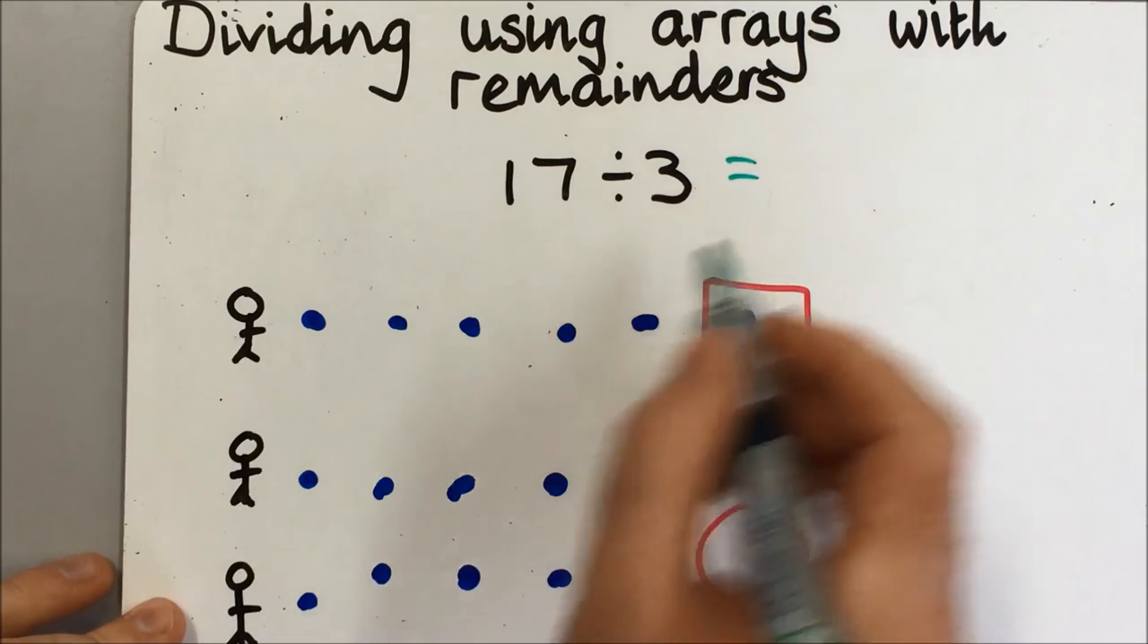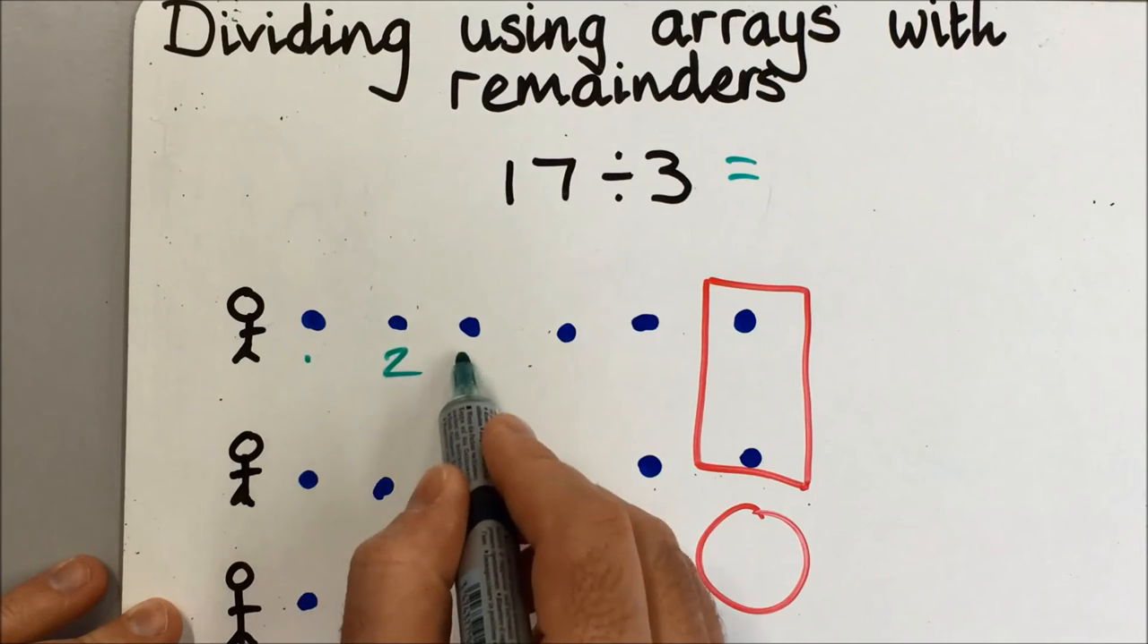So when we say how many have they got each, everybody has got 1, 2, 3, 4, 5.